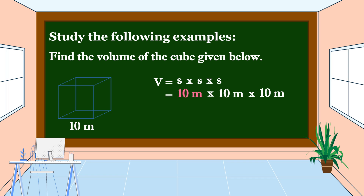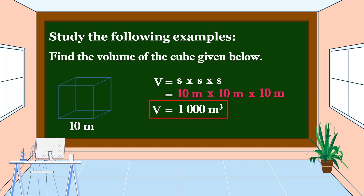Let's multiply. 10 meters times 10 meters is equal to 100 square meters. Times 10 meters is equal to 1000 cubic meters. This is the volume of this cube with a side of 10 meters.